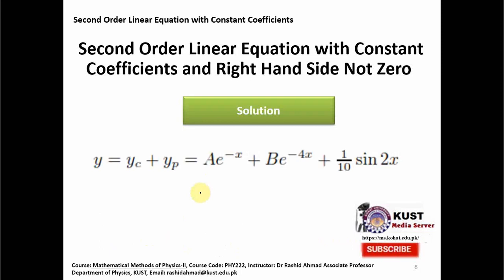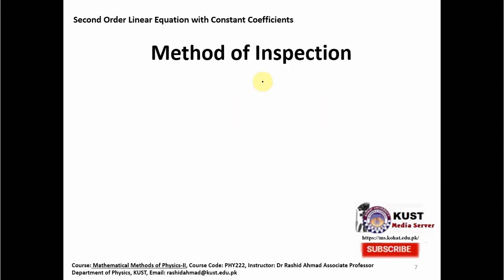The complete solution can now be written as the complementary function — which was the solution when the right hand side was zero — plus the particular solution, which equals (1/10)sin(2x). This is the complete solution y. Now that we know the complete solution, it is time to show how we can find the particular solution. For finding the particular solution we will use different methods. The first and simplest method is the method of inspection.